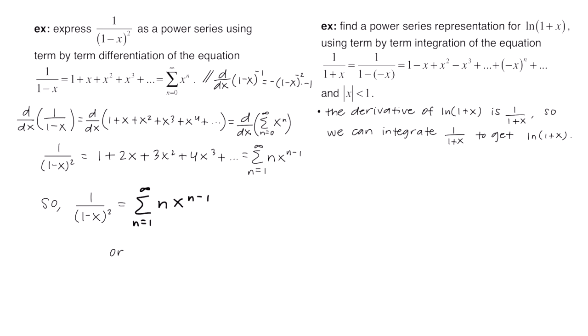I also want to rewrite this if n were to start at 0. We need to adjust the expression so that plugging in 0, 1, 2, and so on gives the same terms. To do that, we replace the n's with n plus 1, and for the exponent, n plus 1 minus 1 is just n. So either of these answers works.